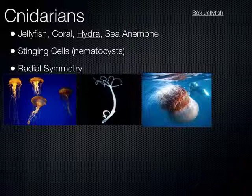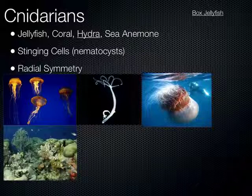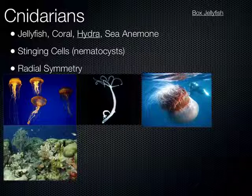Some are bioluminescent — they can create light using chemical reactions within their bodies. Coral, if you know what a coral reef is, is also a cnidarian. Coral grows generally in colonies of many individual organisms. They secrete a calcium-based skeleton which forms a reef, and they generally live with a symbiotic algae which goes through photosynthesis to obtain nutrition. Coral reefs are some of the most diverse and productive ecosystems on Earth.